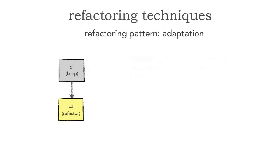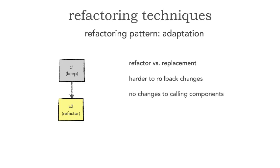Notice this does not involve other components. If we analyze this, we find out that it's really not a replacement but a refactoring of C2 in place. While it's a little bit cheaper because we're not doing dual maintenance, the problem is it is harder to roll back changes. If we have an error, we have to roll back the original functionality of C2, which is much more disruptive than the migration pattern. However, the advantage of adaptation is that there are no changes to any of the calling components. If we have a high level of afferent coupling — in other words, many components talking to C2 — then this is a good choice because none of those components even know the refactoring is happening.